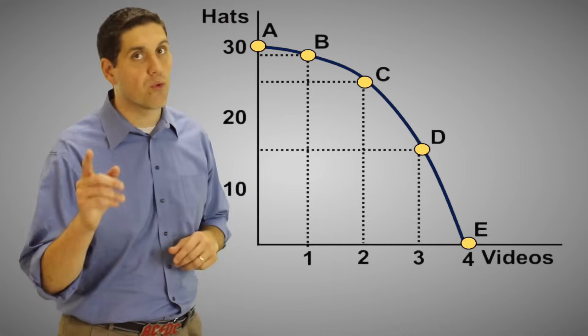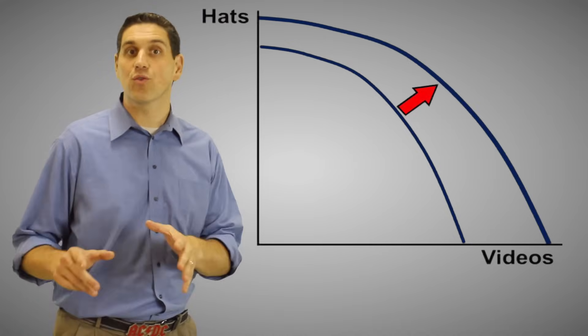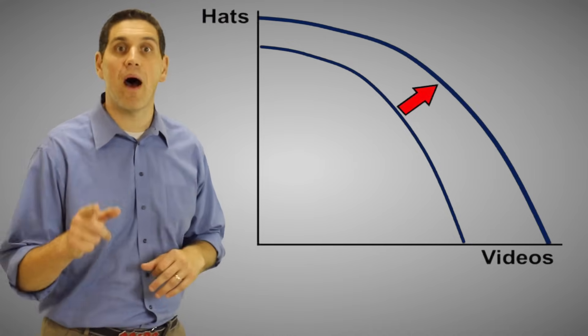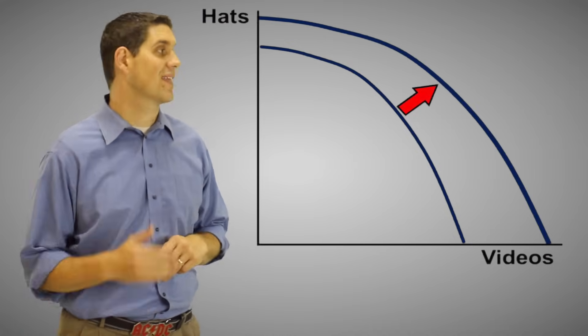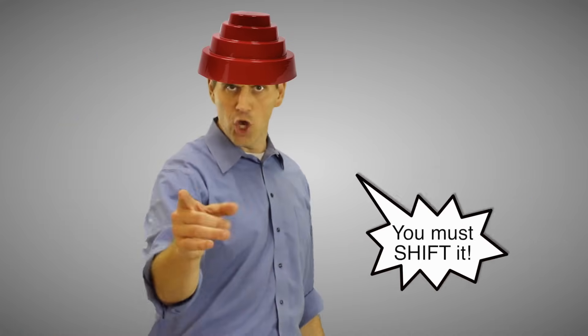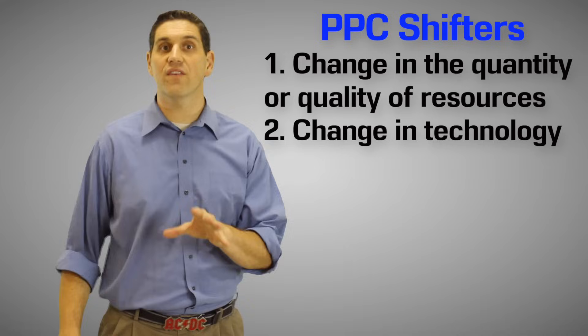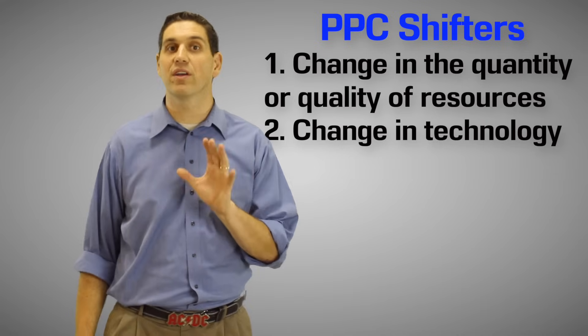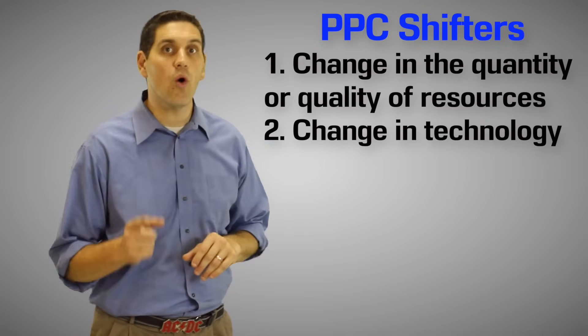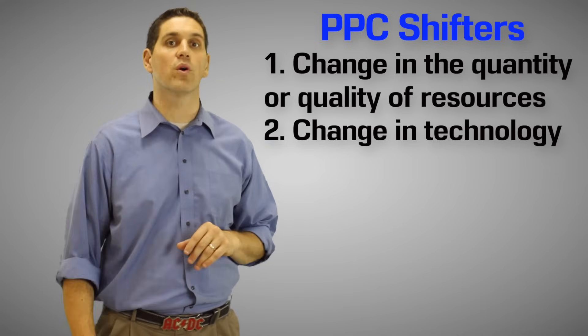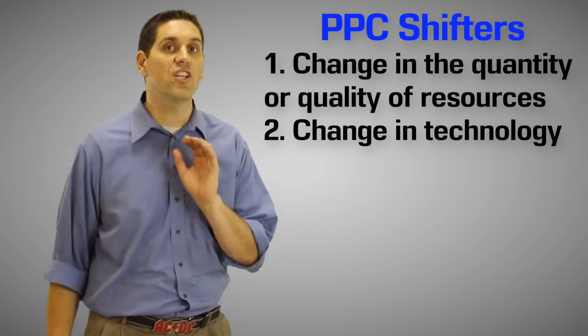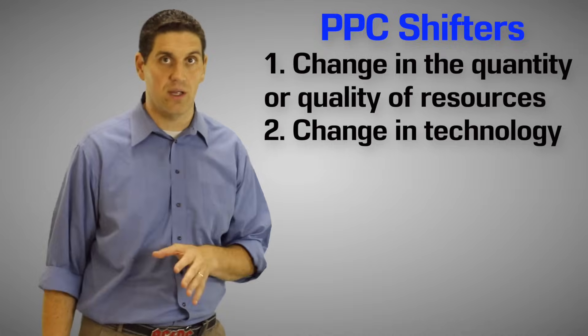But what if we get more resources? The production possibilities curve can shift. Now there are two things that shift the production possibilities curve: a change in the quantity or quality of resources, or a change in technology.